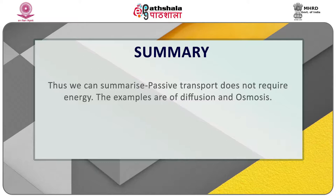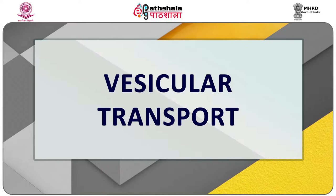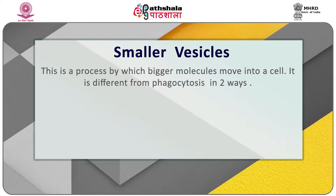To summarize: passive transport does not require energy — the examples are diffusion and osmosis. Active transport uses energy molecules to change the conformation of cells, thereby facilitating molecules to move across membranes. Now comes the second part: vesicular transport. This uses smaller vesicles and is a process by which bigger molecules move into a cell.